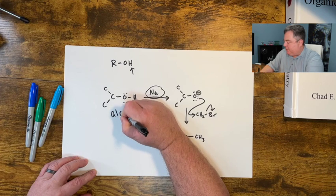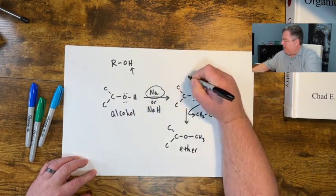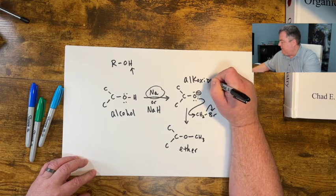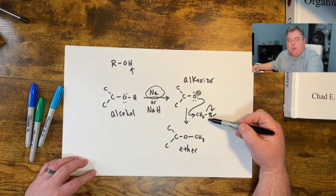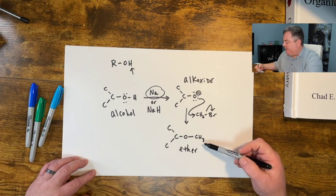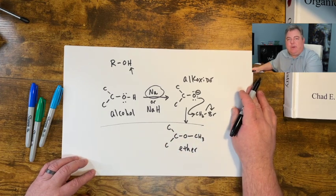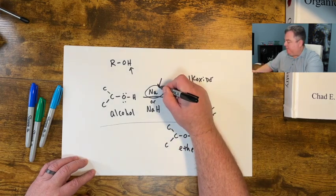So alcohols can become alkoxides. They can backside attack something with a good leaving group and they can make ethers.